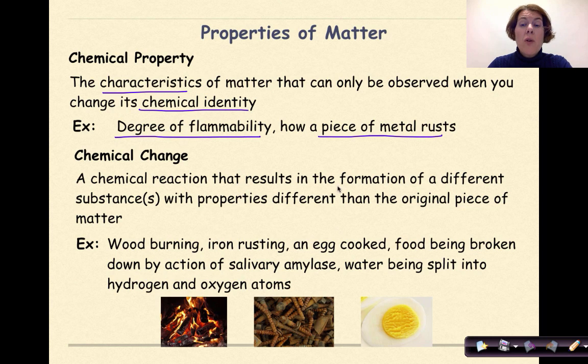A chemical change will result in the formation of a different substance with properties different than the original piece of matter. Chemical changes might include wood burning, iron rusting, cooking an egg.